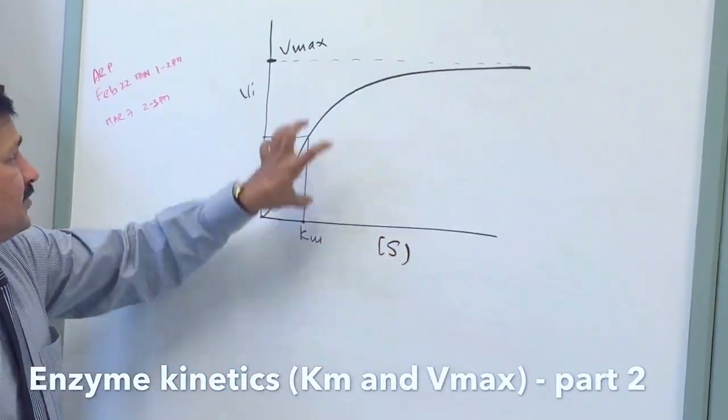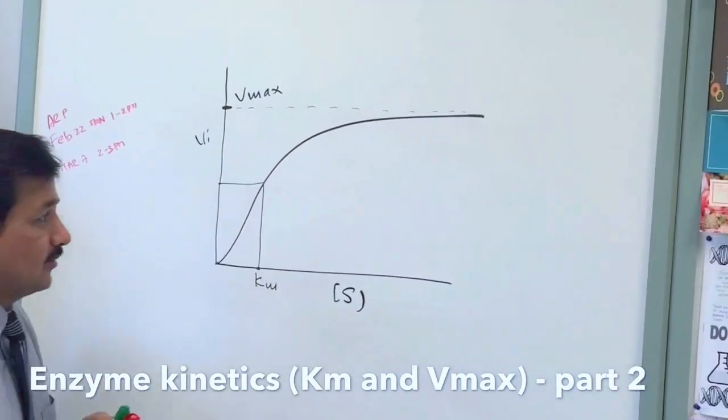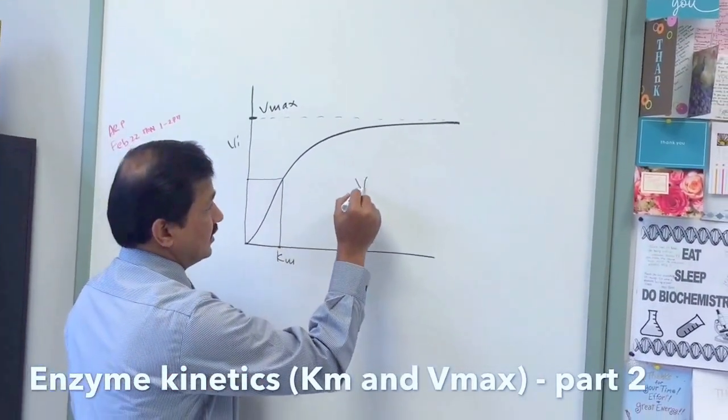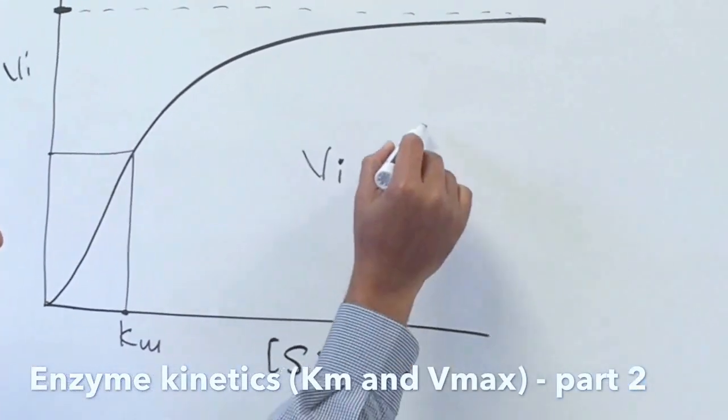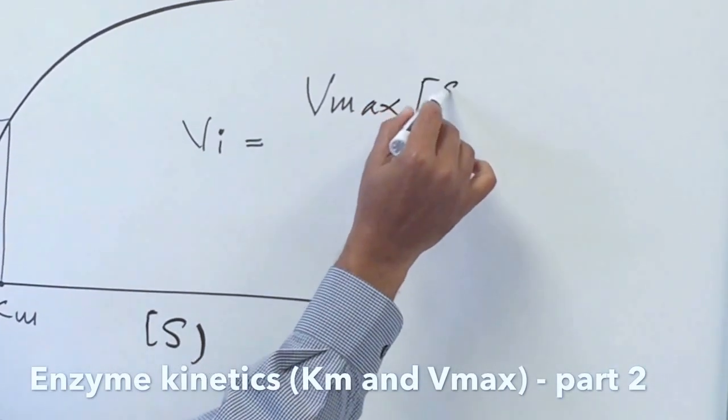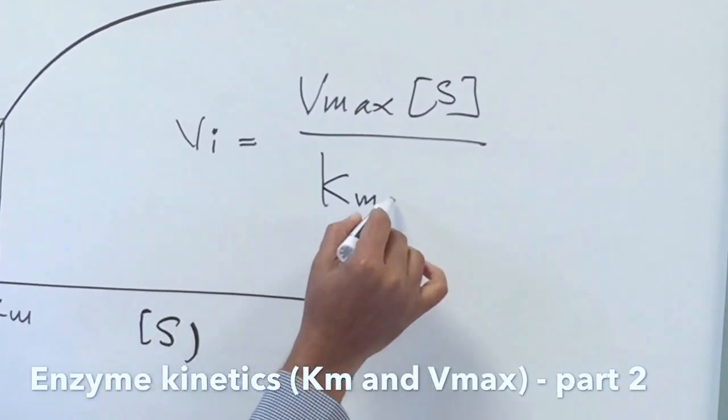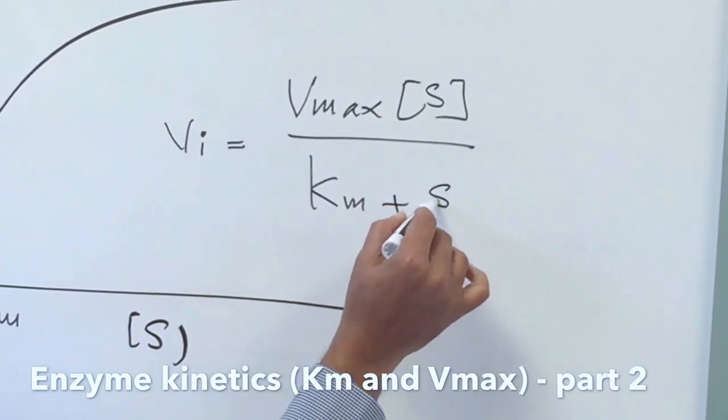Now the relation between substrate, Km, Vmax, and initial velocity, all this can be put together by this equation: initial velocity equals maximum velocity, that is Vmax, multiplied by substrate concentration divided by Km plus substrate concentration.